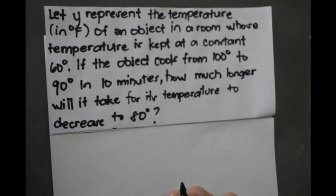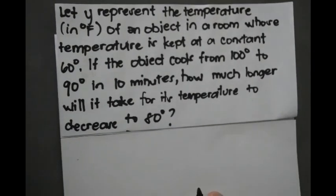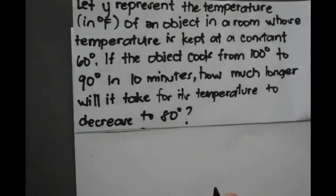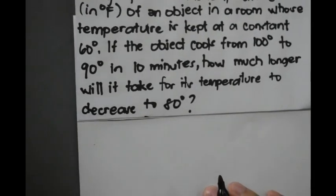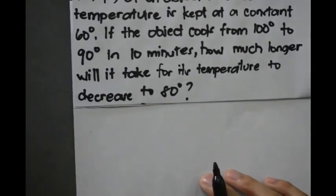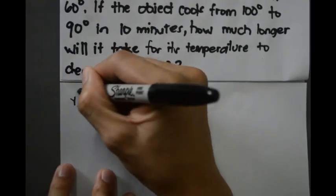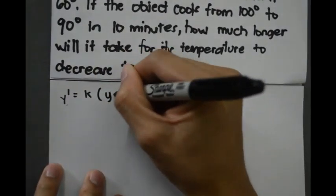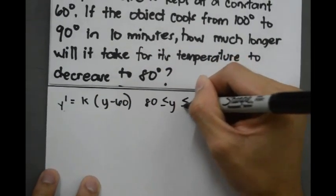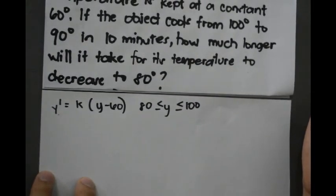Let y represent the temperature in degrees Fahrenheit of an object in a room kept at a constant 60 degrees. If the object cools from 100 degrees to 90 degrees in 10 minutes, how much longer will it take for its temperature to decrease to 80 degrees? From Newton's Law of Cooling, the rate of change in y is proportional to the difference between y and 60: y prime equals k times (y minus 60), where 80 ≤ y ≤ 100. Use separation of variables and integration.